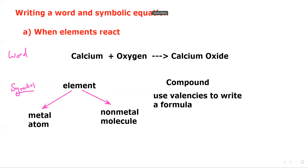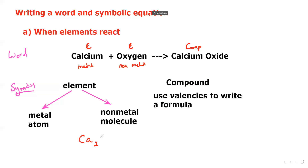Let's identify the substances. Calcium — is it an element or a compound? It's an element, and it's a metal. Oxygen — is it an element or a compound? It's an element, and it's a non-metal. So for calcium, what is the symbol? We use the periodic table — calcium is Ca. Because calcium is a metal, we don't write Ca₂; for metals, we just write them as atoms, so calcium is simply Ca.